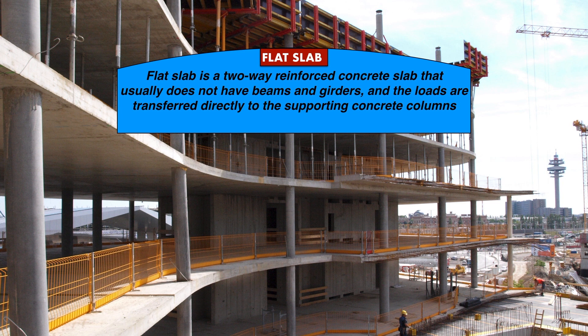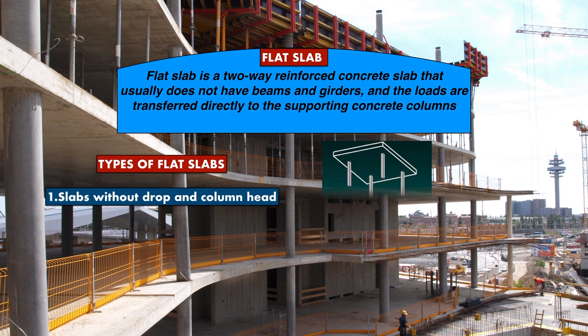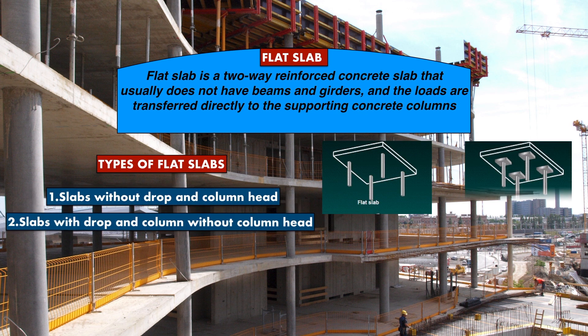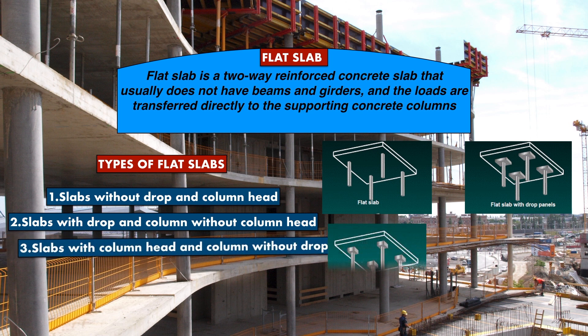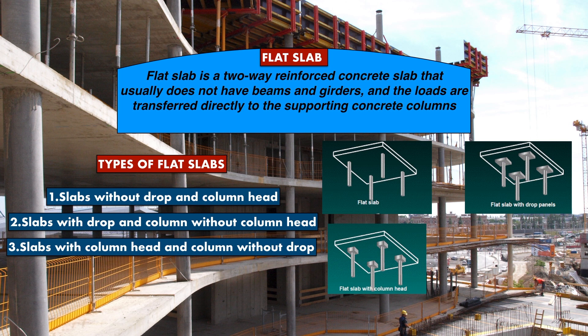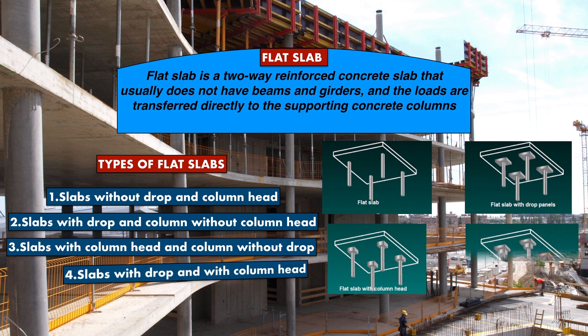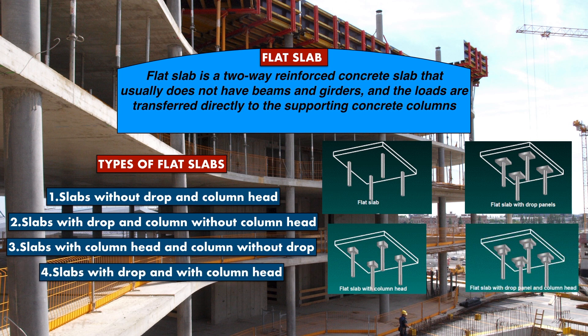We have four types of flat slabs. The first one is slabs without drop and column head. The next one is slabs with drop and column without column head. The third one is slabs with column head and column without drop. And the last is slabs with drop and with column head.